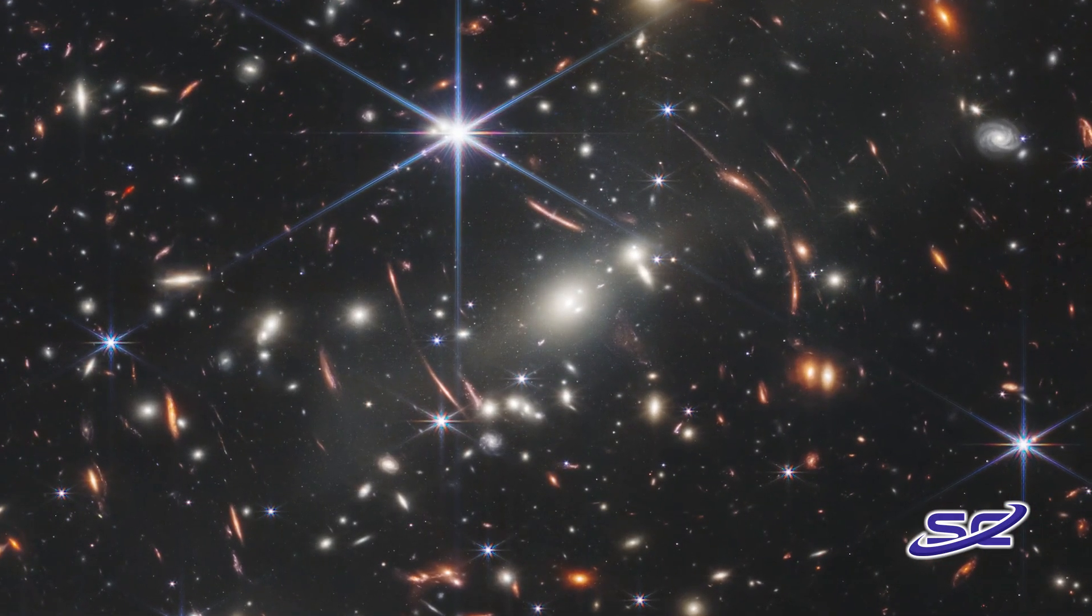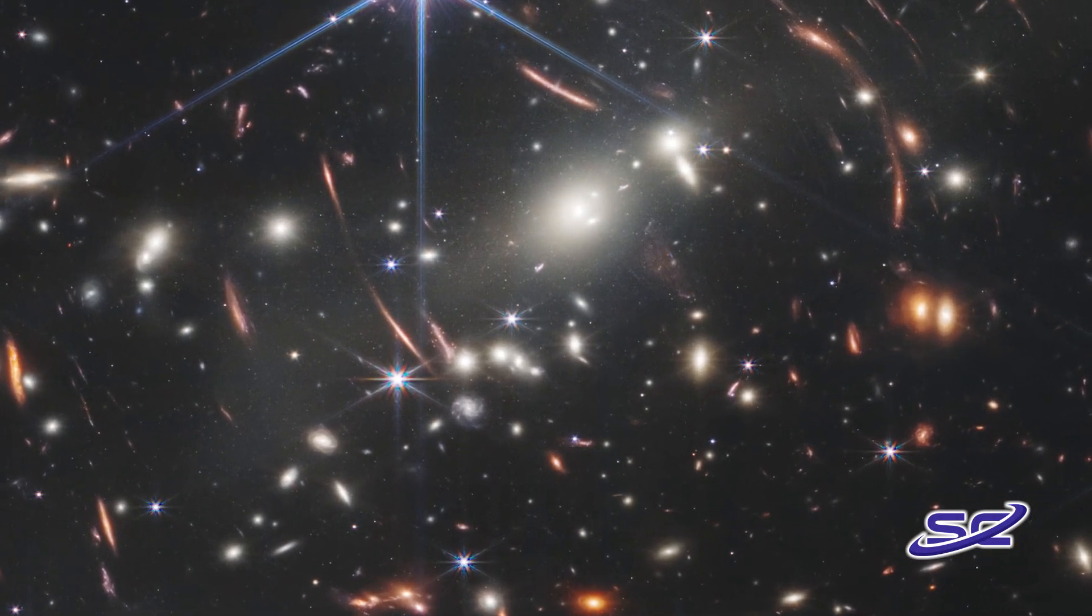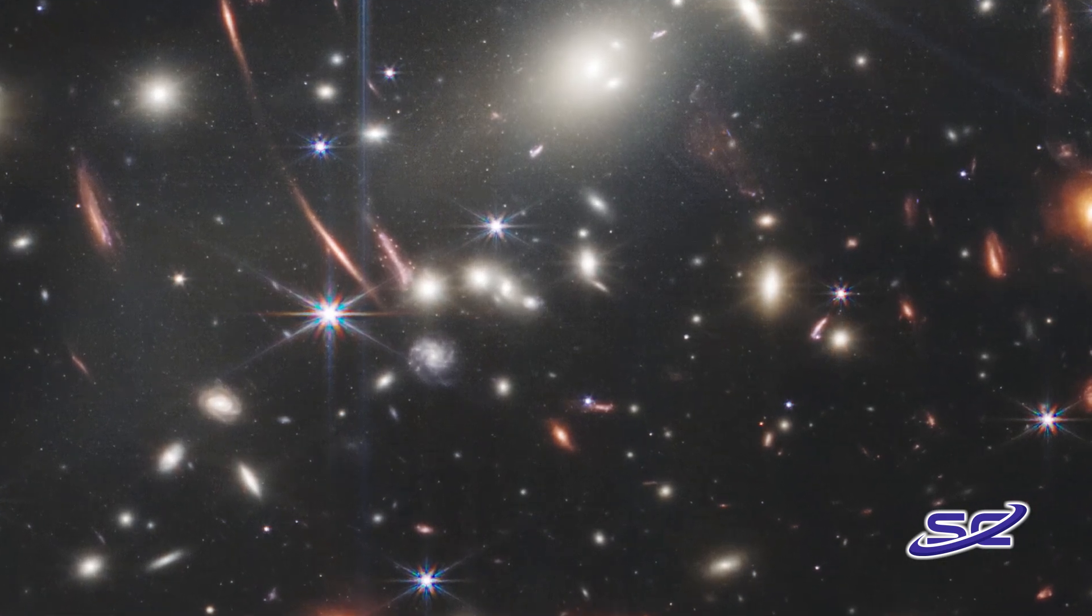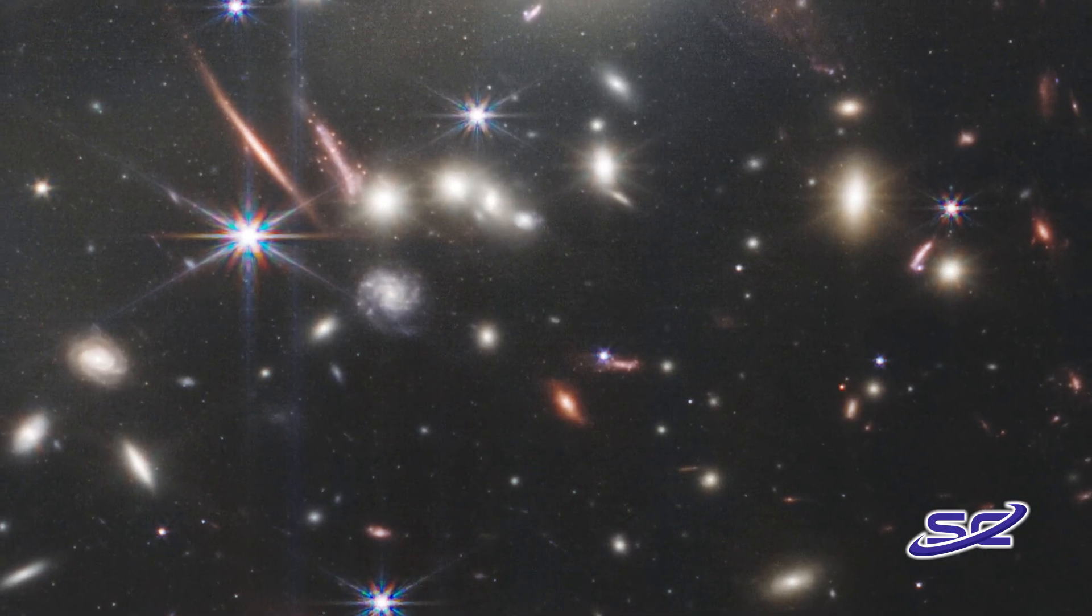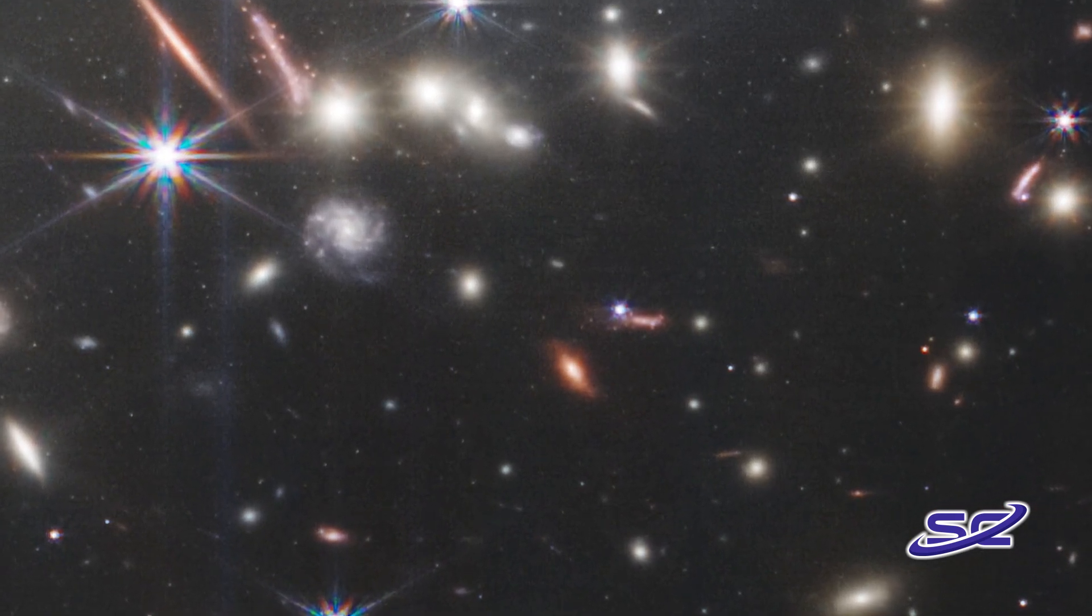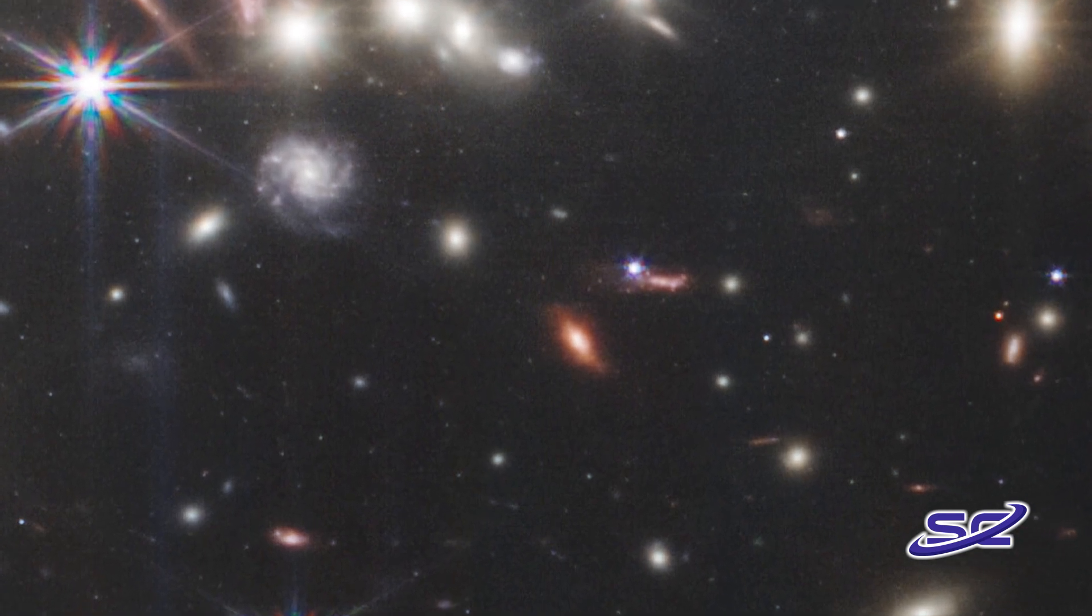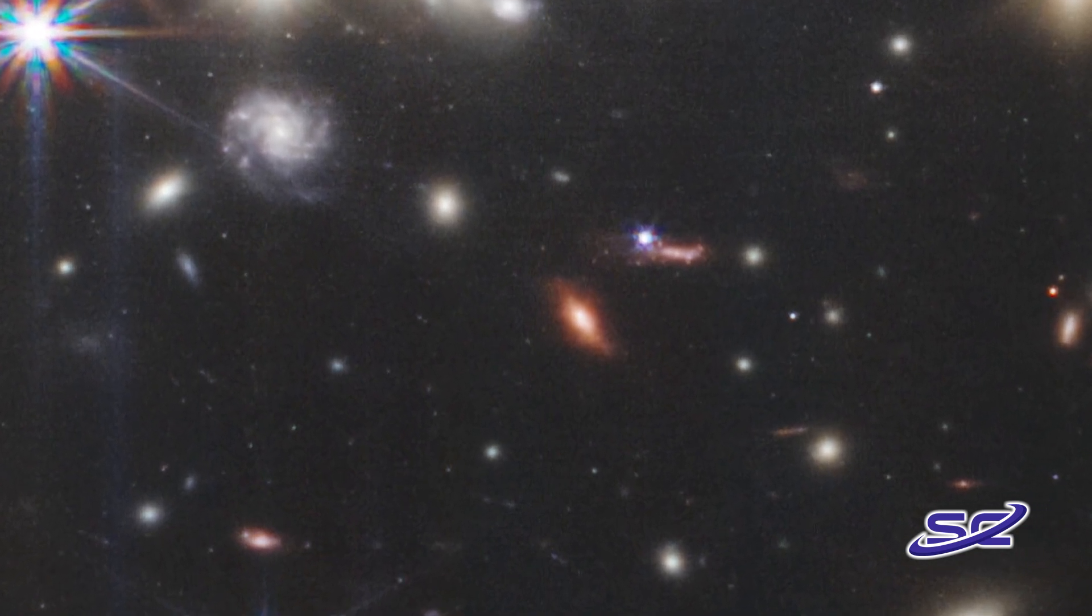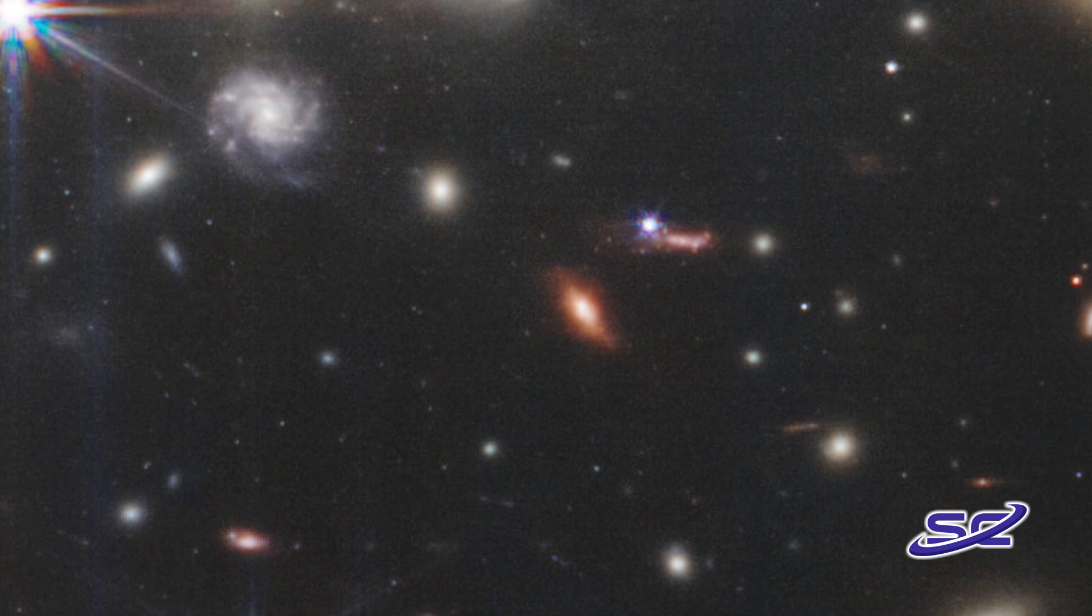The first full-color image snapped by JWST reveals a galaxy cluster called SMACS-0723, as it appeared 4.6 billion years ago. That means the light took that long to get here. That's how far away it is. Here are the NASA folks with more.